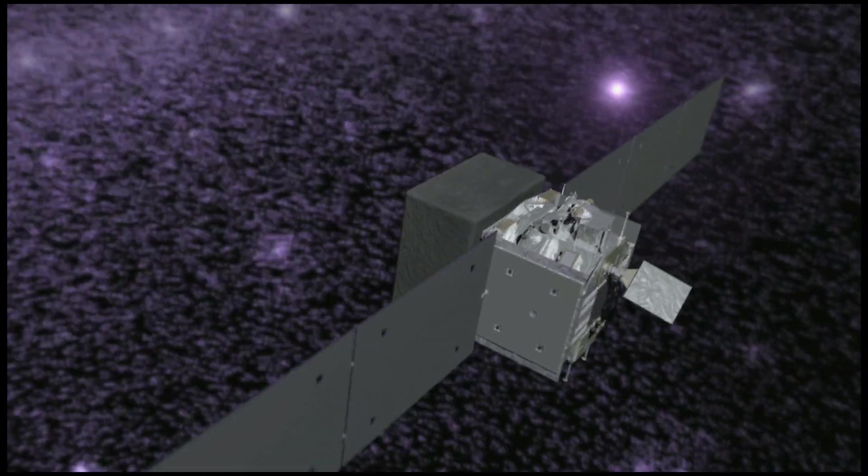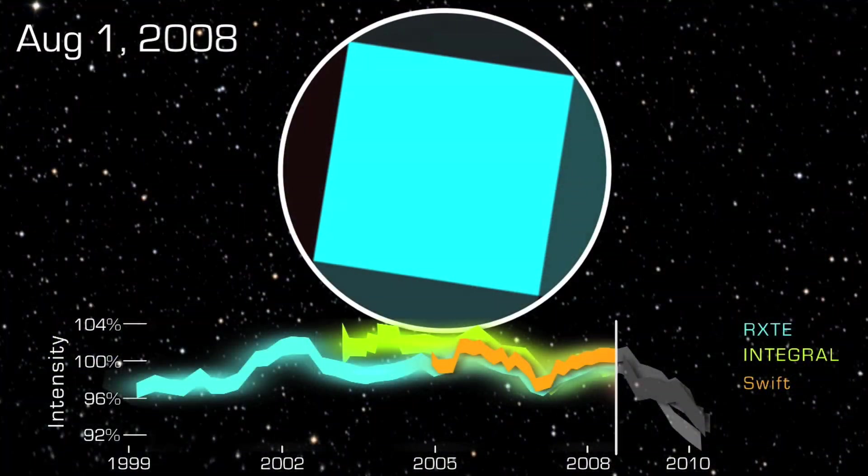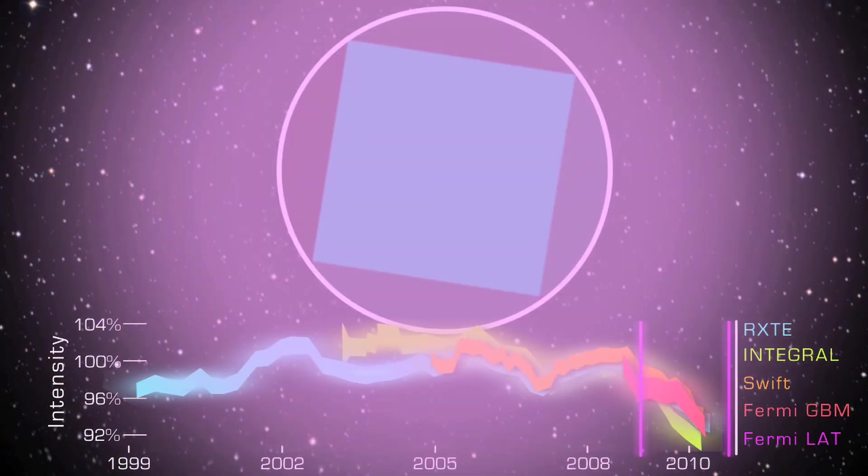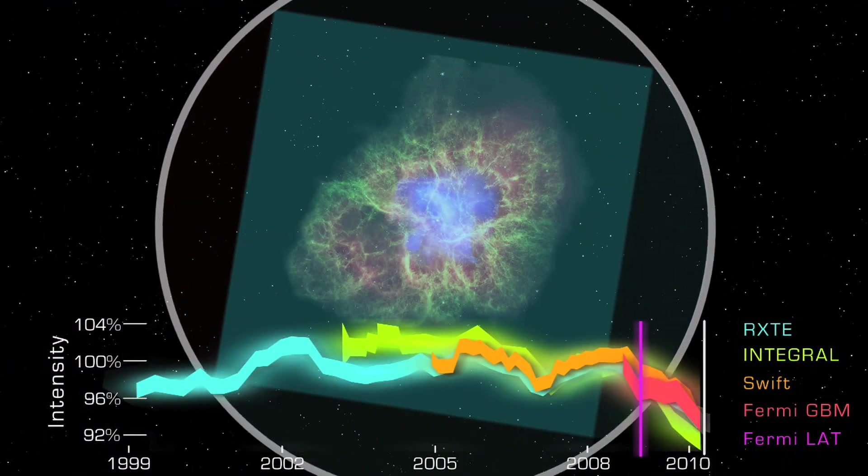The gamma-ray burst monitor on NASA's Fermi satellite detected the decline, and Fermi also spotted two gamma-ray flares at even higher energies. What's going on?